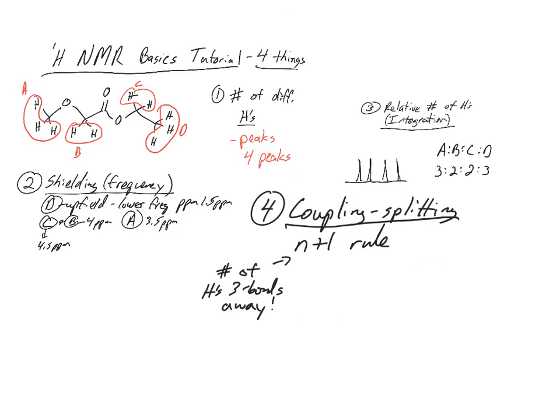The last and final thing NMR tells us gives us our complete picture. It tells us something about the coupling or splitting. This tells us what hydrogens are actually close to each other — three bonds away from each other. To step back: the first thing NMR told us was the number of chemically non-equivalent hydrogens, giving us four peaks. Shielding tells us what atoms those hydrogens are near — if they're electron-withdrawing, they'll be deshielded and farther downfield; if farther from electronegative atoms, like D, they'll be farther upfield.